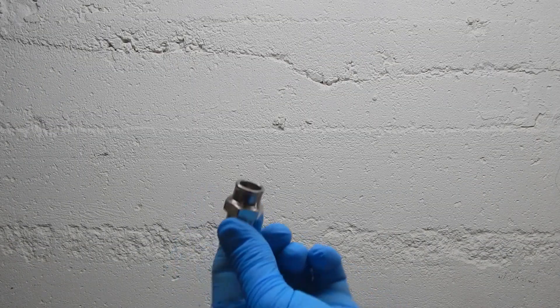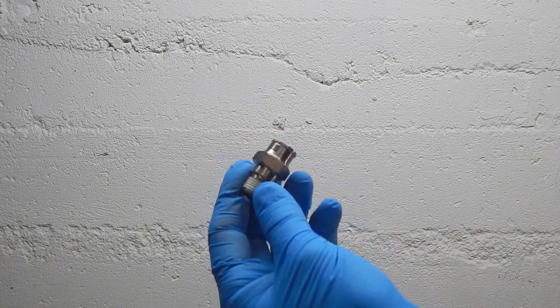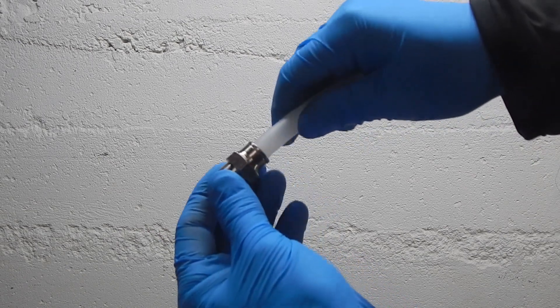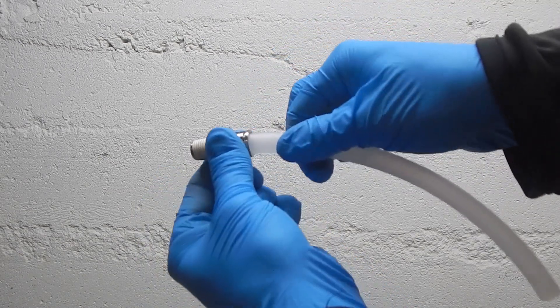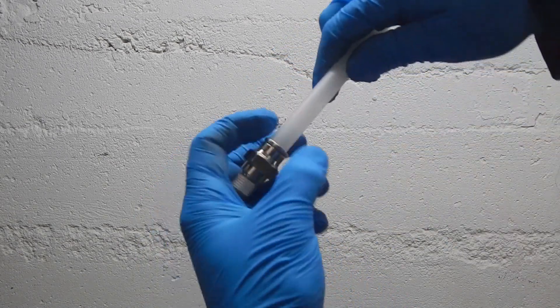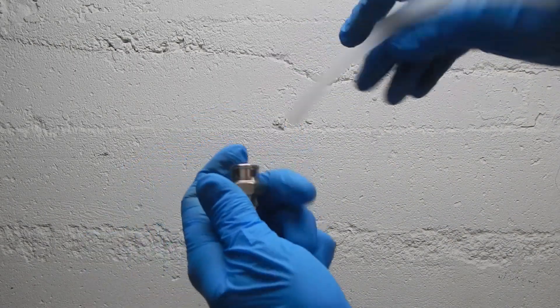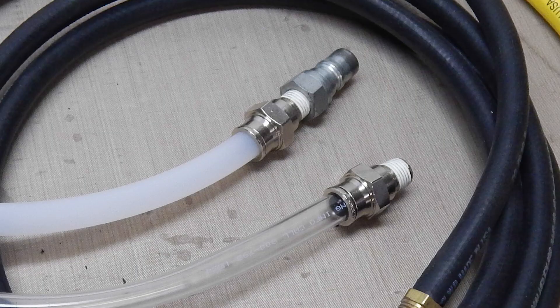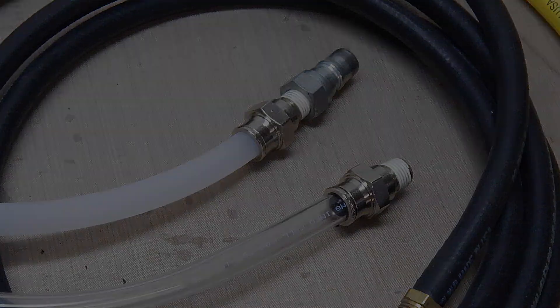Third, we have compression push to connect style fittings that work well with the plastic infusion type hose. These are great for inexpensive room temperature work, vacuum bagging, and you can set up your infusion catch pots with these.